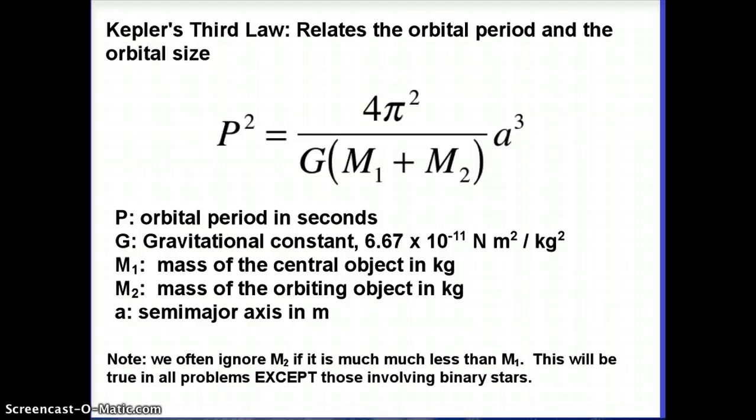Something that's going to happen in a lot of our problems is that the mass of the central object, the thing that's getting orbited, is much, much greater than the mass of the thing that's doing the orbiting. For instance, if you think about the Earth going around the Sun, the mass of the Earth is way smaller than the mass of the Sun.